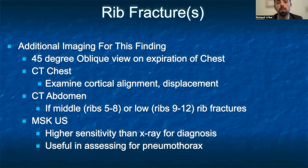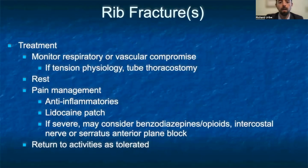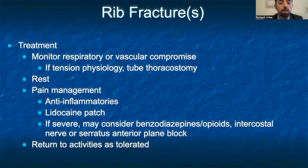Ultrasound has become more useful in rib fractures, as it has been shown to have higher sensitivity in diagnosis and is useful in assessing for pneumothorax. In the case of acute rib fractures, respiratory and vascular status must be closely monitored for any signs of tension physiology. The vast majority of rib fractures may be treated conservatively, ultimately entailing rest, pain management, and return to activities as tolerated.